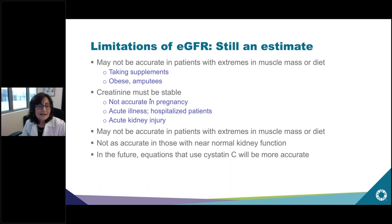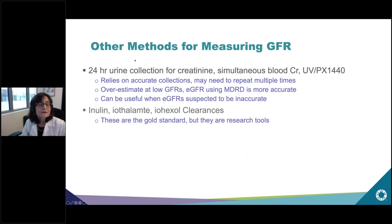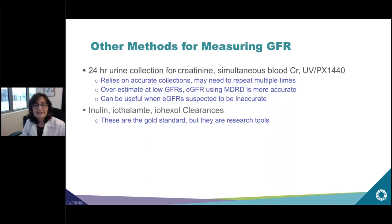Estimating equations are also not accurate in acute kidney injury or near-normal kidney function. In the future, equations that use cystatin C will be more accurate. There are other methods: 24-hour urine collections for creatinine, combined with a simultaneous blood creatinine, allow you to calculate creatinine clearance, which may be close to the estimated GFR. The limitation is it relies on accurate collections, which can be burdensome, especially if you work.